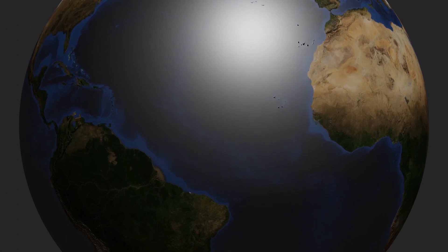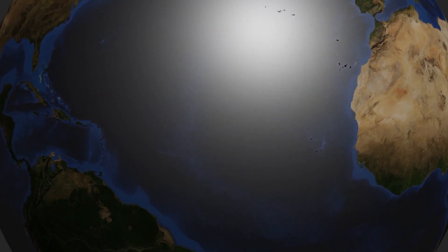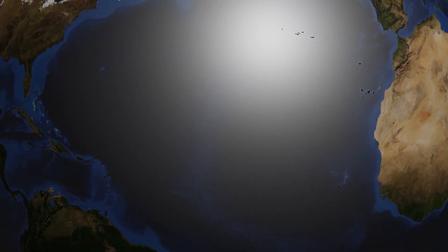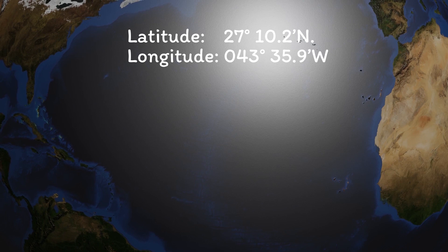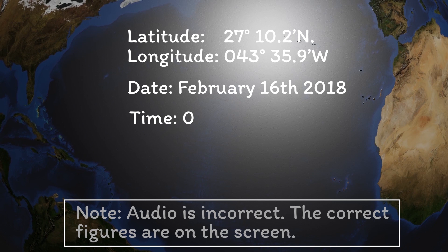So first off, we're going to need a set of starting information before we can even enter the almanac. We're going to assume a position of 27 degrees, 10.2 minutes north, 043 degrees, 35.9 minutes west, which places us somewhere in the middle of the Atlantic. The date we're going to say is February the 16th, 2018. Our local time is 03.30 and 15 seconds, and our time zone is UTC minus 3.